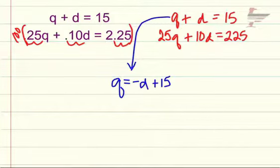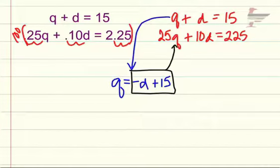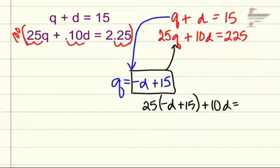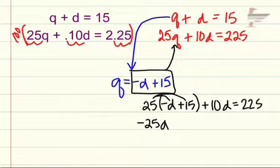That's what Q is equal to, negative D plus 15. We're going to take that, go to the equation we haven't used yet, which is our second one, and we're going to substitute that in for the Q value. So we have 25 times negative D plus 15 plus 10D equals 225. Now we're just going to do some distributing. We have negative 25D, 25 times 15 is 375, plus 10D equals 225.